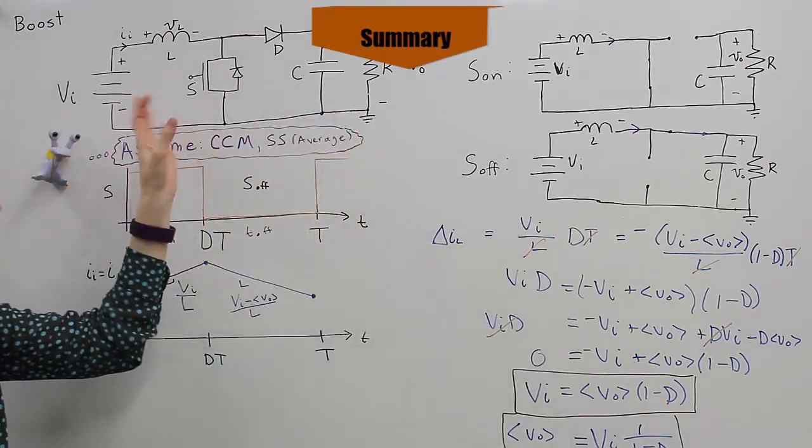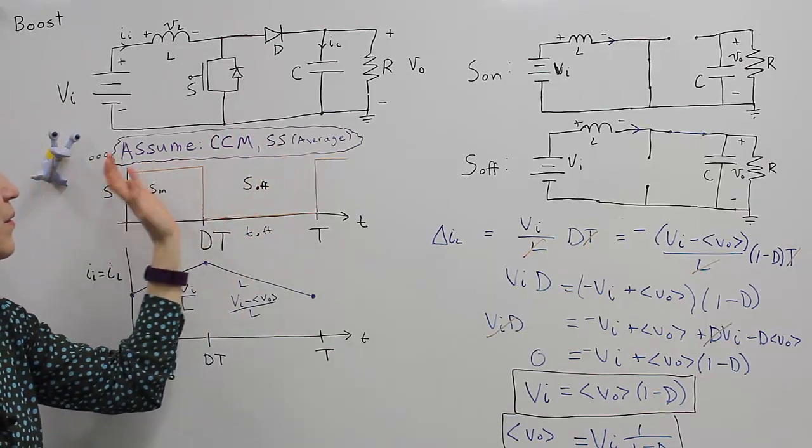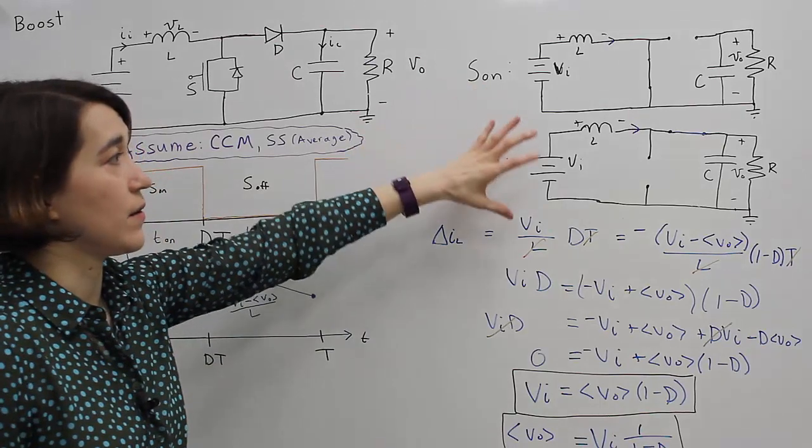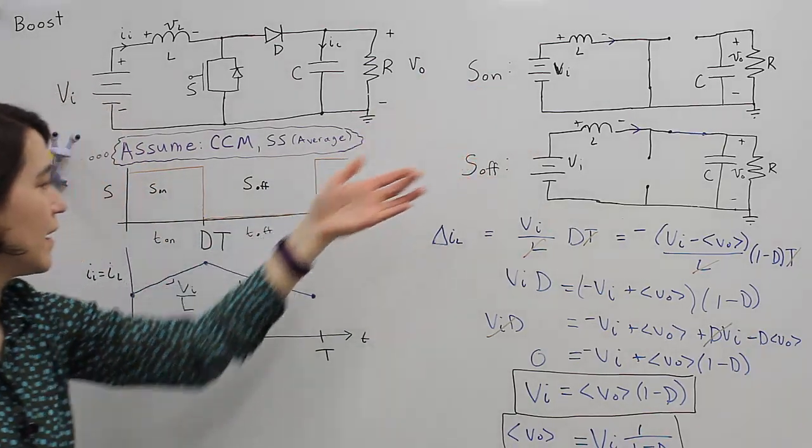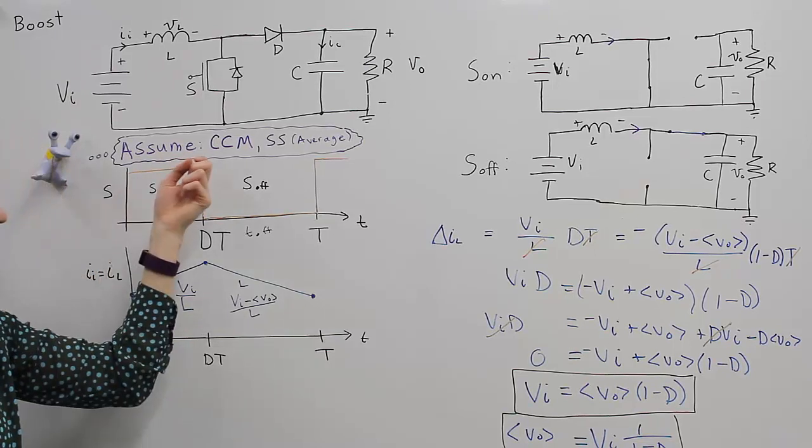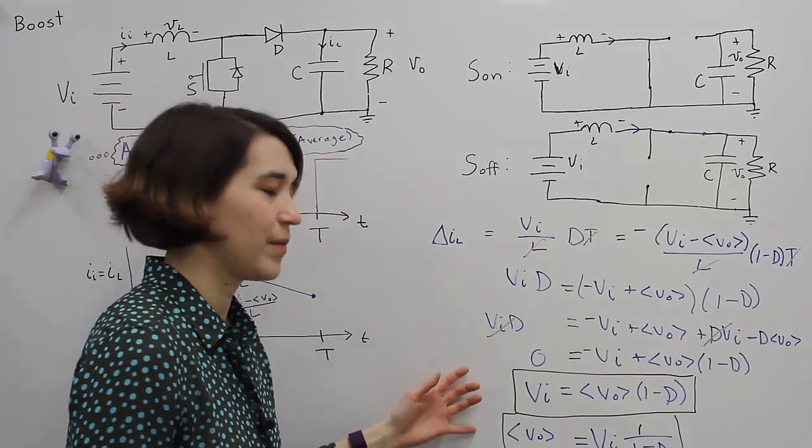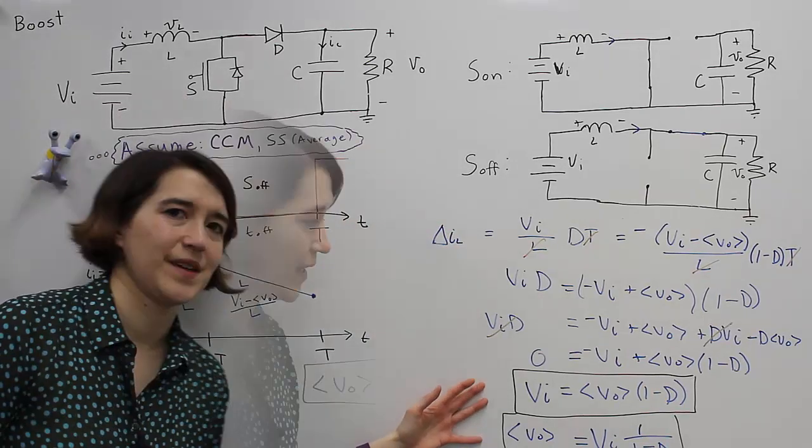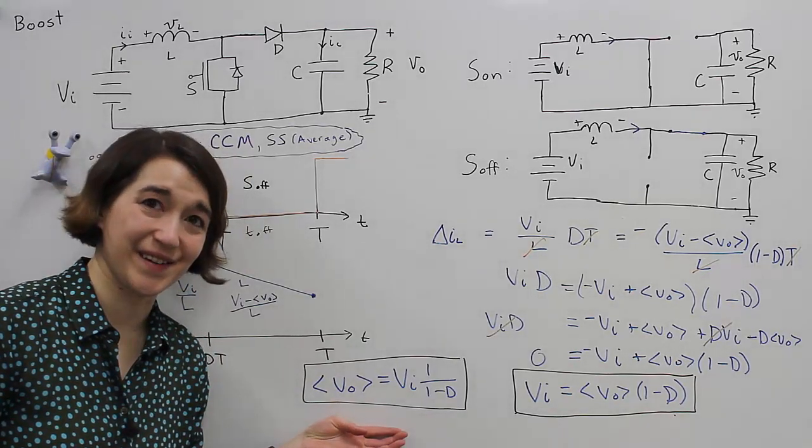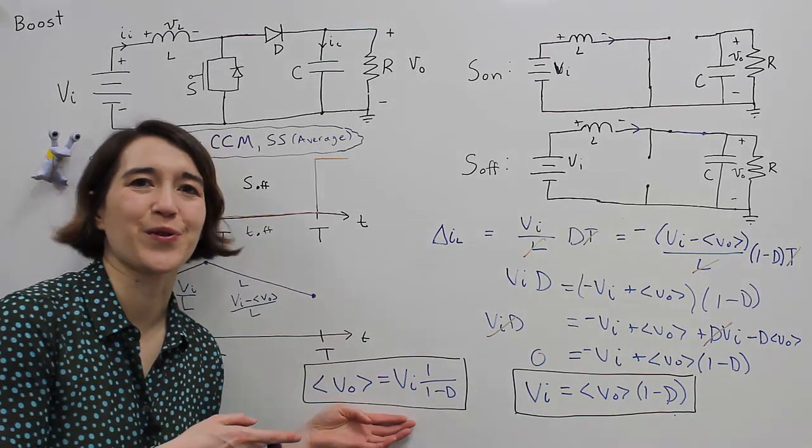Again, we've taken this relatively complicated switching circuit. And because we make these assumptions about operating mode, we can boil it down to just these two different switching states. Look at the balance of the inductor in CCM and steady state. And we can derive this pretty basic relation between these two. So this equation got cut off over here. I just moved it right here to rewrite it. So this is the equation that you need to remember for the boost converter.